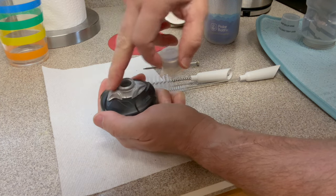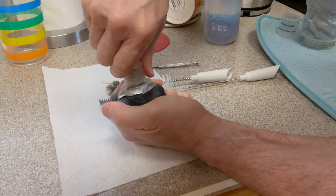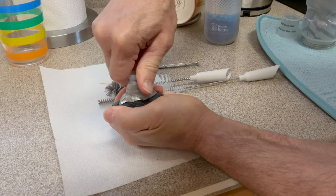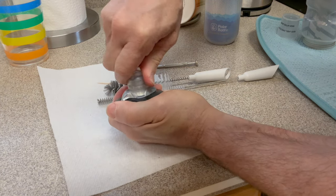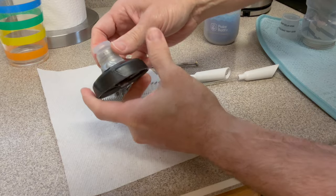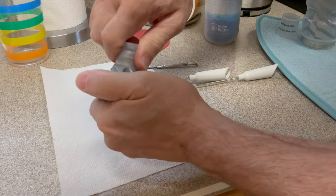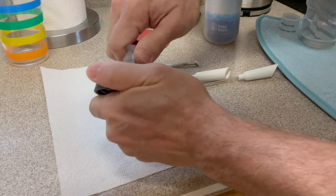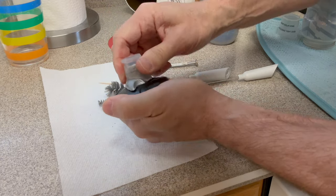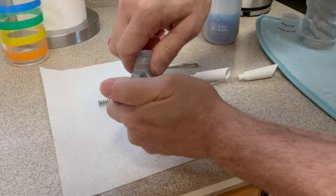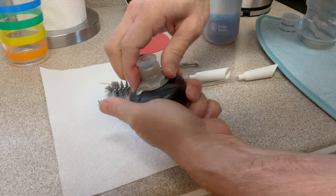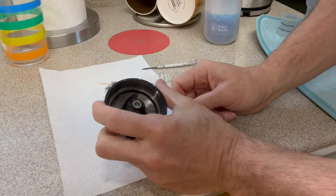Then twist until it gets there, pretty snug. And there you have it again—you're not able to remove it. So it's nice and snug, and it's all in.